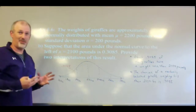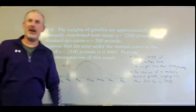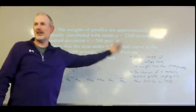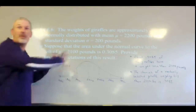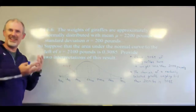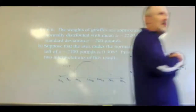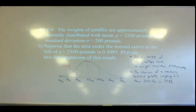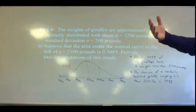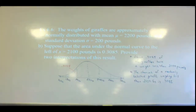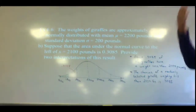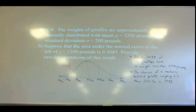The second interpretation is similar but slightly different. The chances of a randomly selected giraffe weighing less than 2,100 pounds is 0.3085. One is talking about proportion — how many out of the entire group. And the other is talking about what are the chances — probability. But they're really very similar in how they work.